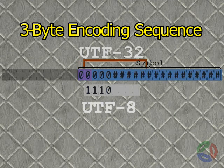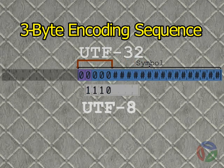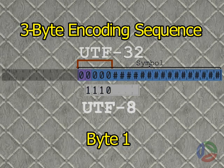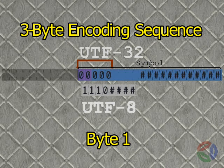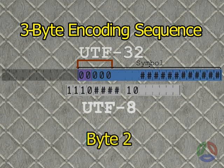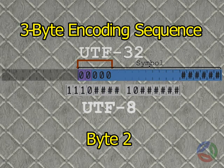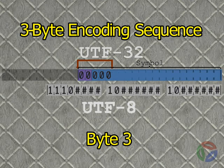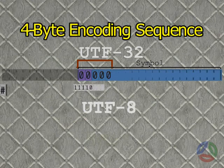3-byte sequence: If any of bits 11 through 15 are 1s, but bits 16 through 20 are all 0s, then the code point occupies 16 bits and requires 3 bytes for encoding. In this case, the start byte begins with 1110, leaving space for the first 4 bits of the code point. Encoded byte 2 begins with 10, leaving space for the next 6 bits of the code point. Encoded byte 3 also begins with 10, leaving space for the final 6 bits of the code point.